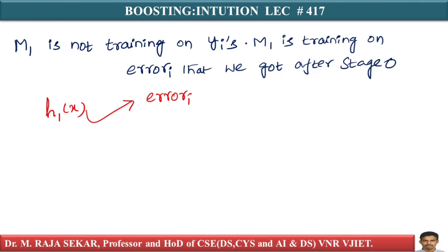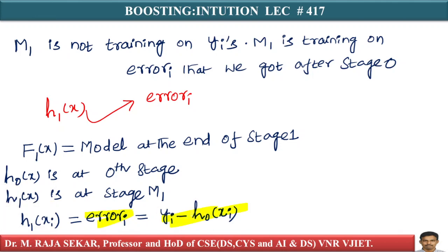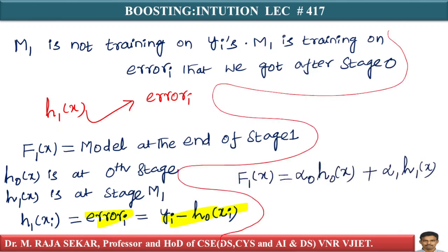At the end of stage one, the combined model is: F1(x) = α0 * h0(x) + α1 * h1(x). Here h0(x) is the model from stage zero and h1(x) predicts the residuals from stage zero. This is the additive combining step.